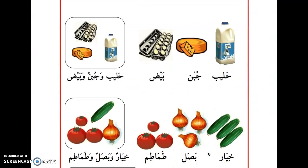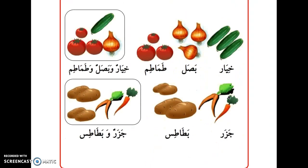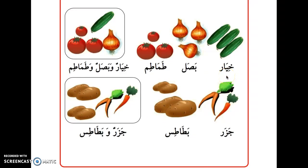Let's move to another one to review. حليب (milk), جبن (cheese), بيض (eggs): حليب وجبن وبيض — milk and cheese and eggs. Next: خيار (cucumber), بصل (onion), طماطم (tomatoes): خيار وبصل وطماطم — cucumber and onion and tomatoes.